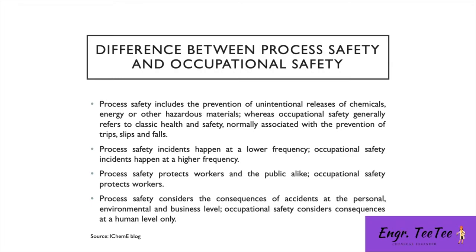This comparison is sourced from the IChemE blog — the Institute of Chemical Engineers. Process safety involves the unintentional release of chemicals, energies, or hazardous materials, whereas occupational safety focuses on things like preventing trips, slips, and falls — that's classic health and safety.